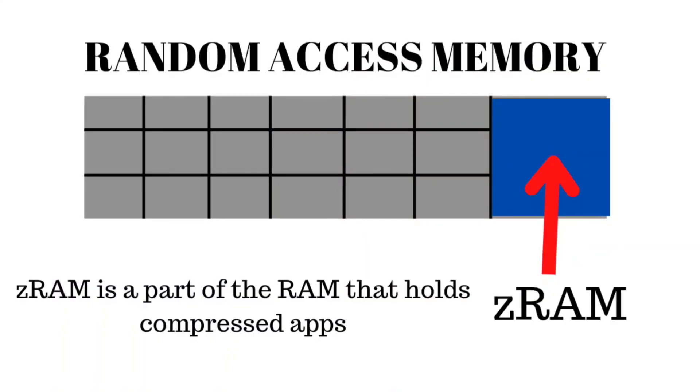That's what ZRAM is for, and I think it's a very, very impressive way to manage space. If you ever hear the term ZRAM, simply put: ZRAM is a part of your RAM — random access memory — on your phone or computer that holds compressed app data. Whenever the operating system needs space, it compresses running tasks or apps in memory and saves them to the ZRAM. When those apps are needed, they are decompressed and swapped out of the ZRAM back into the main memory to continue running as usual.